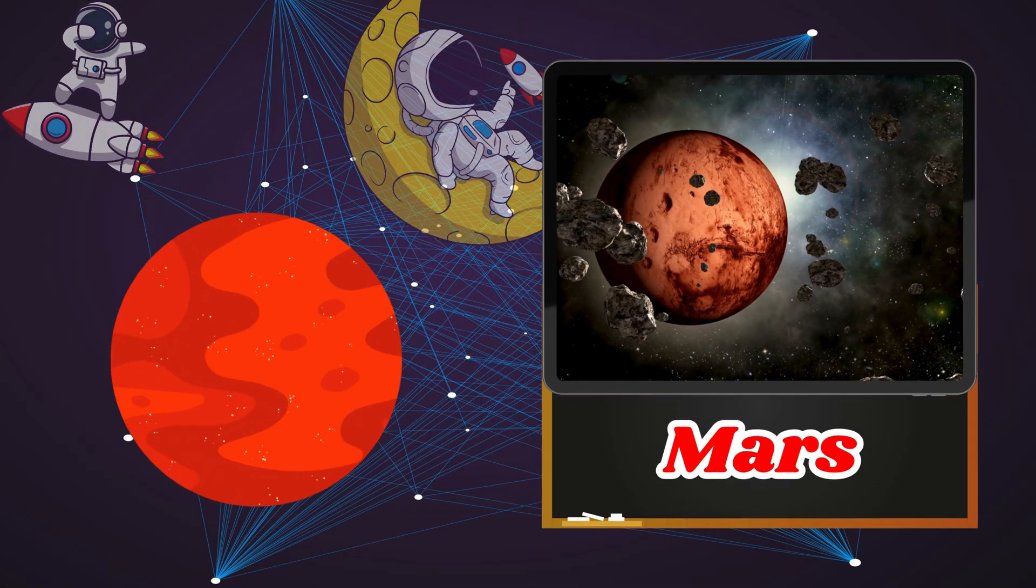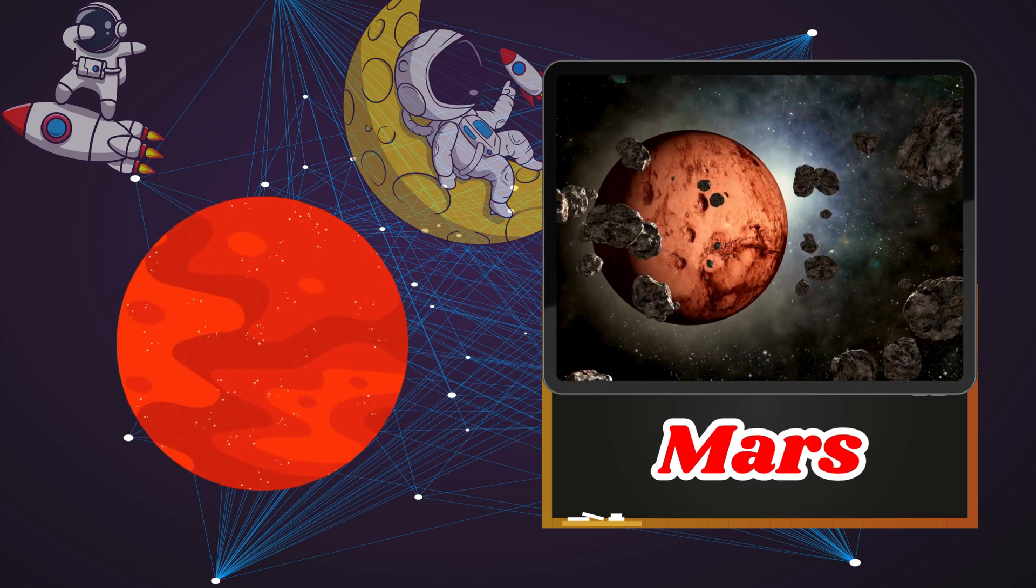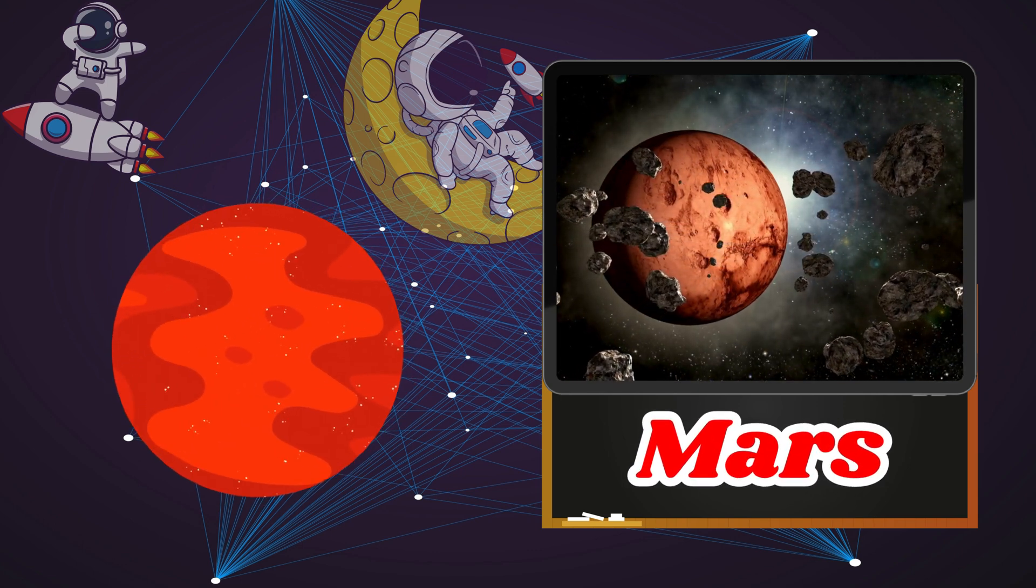Mars is known as the Red Planet because of its red soil. Scientists think there might have been water there long ago.